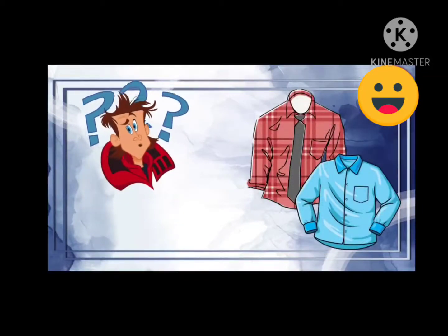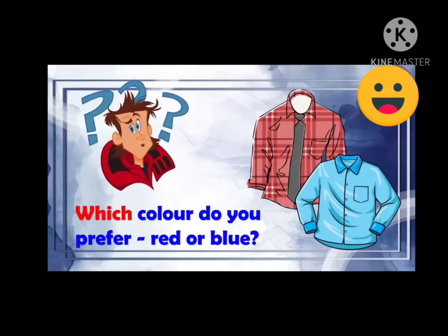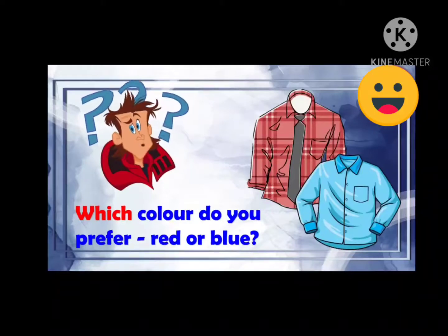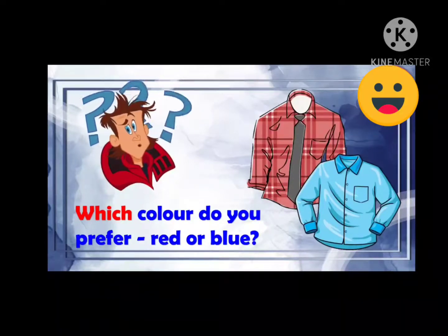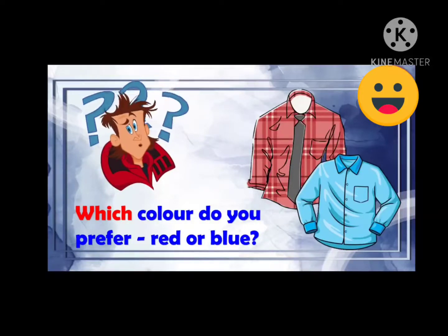Let's have a look at the next interrogative pronoun. Our sentence says: Which color do you prefer, red or blue? In this sentence, the interrogative pronoun which provides us with a choice of color — red or blue. It asks a question to a person giving them a choice. Which is used to ask questions about people or objects, and the interrogative pronoun which provides us with choices. So which is an interrogative pronoun asking questions to people or objects and giving choices.